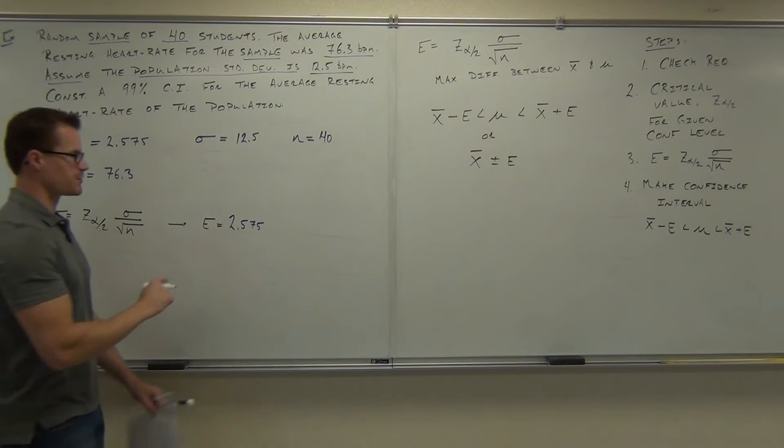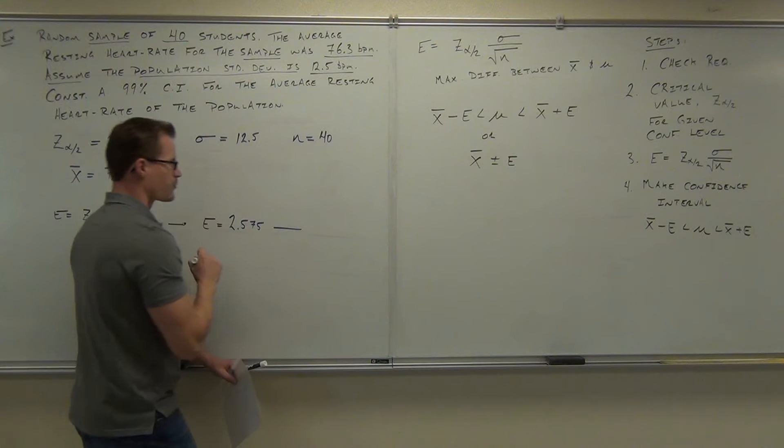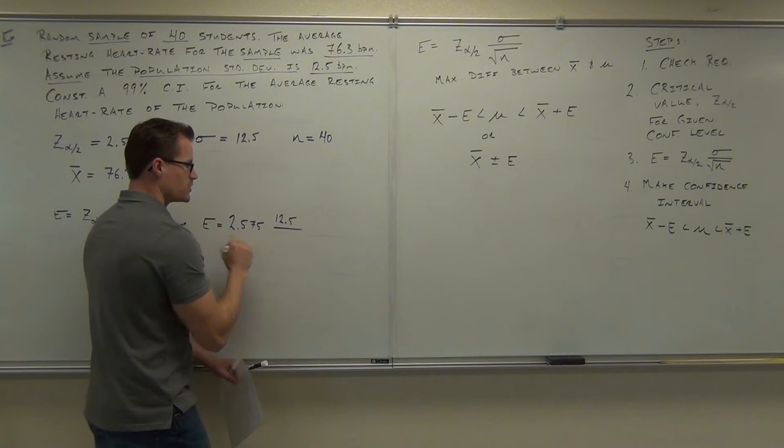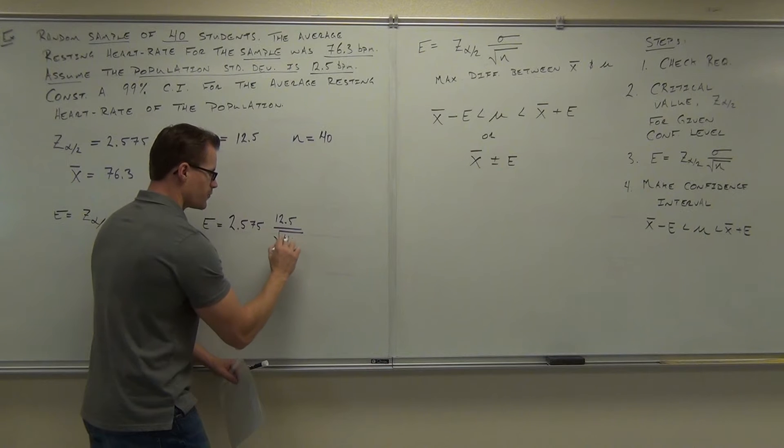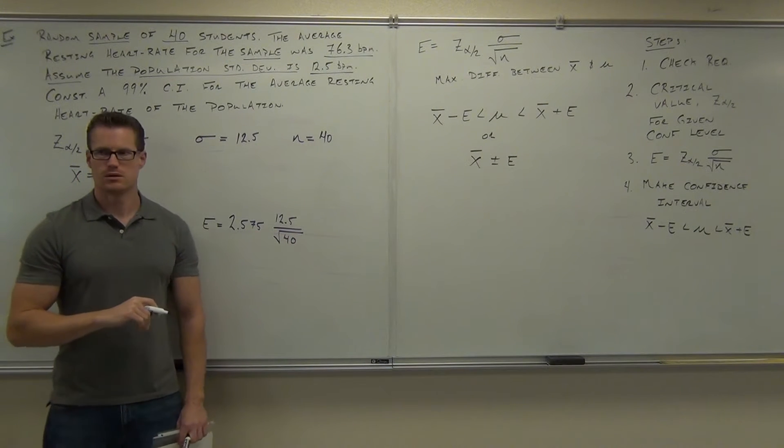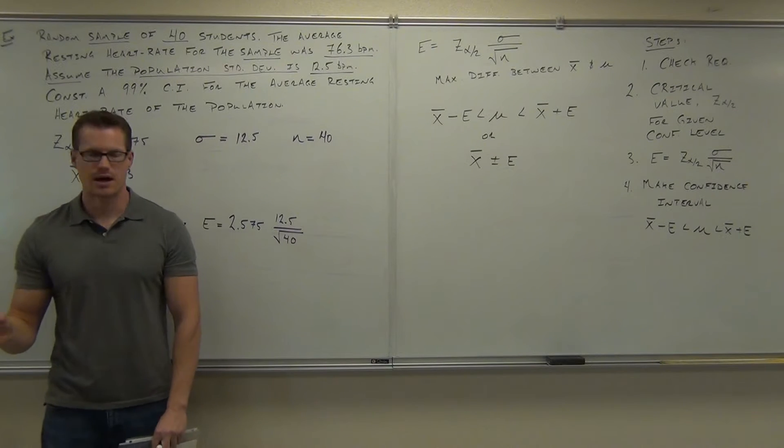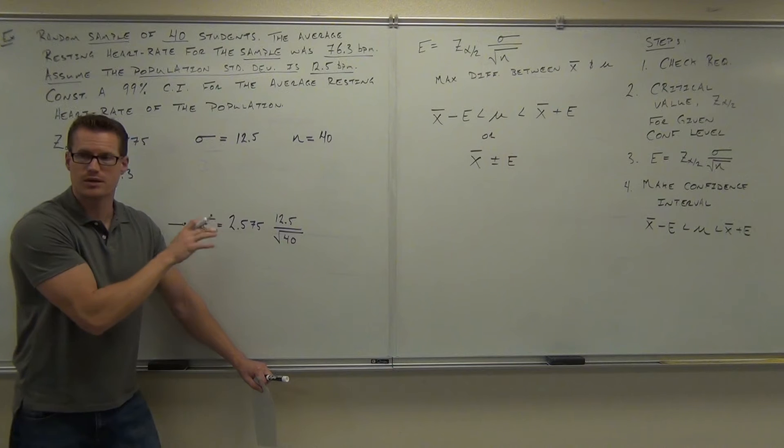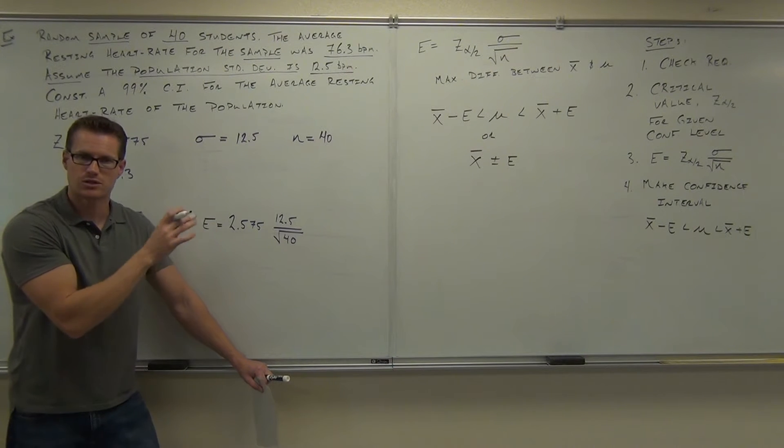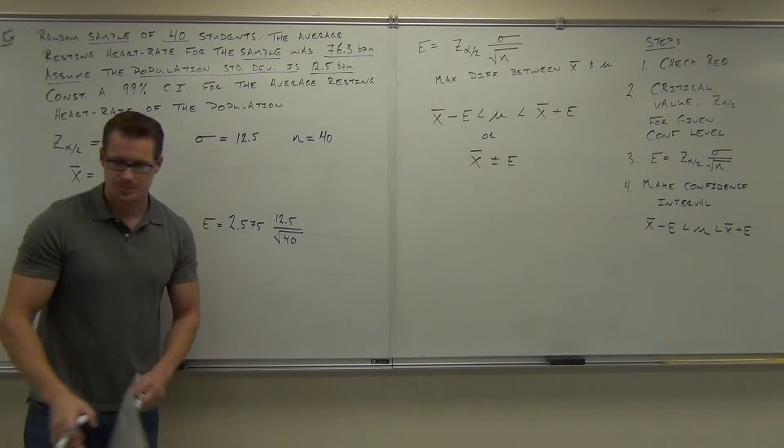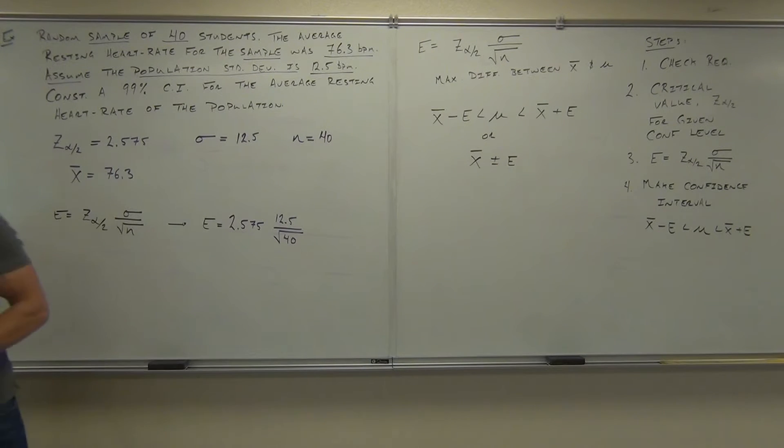So you take your critical value. You multiply that by your population standard deviation divided by the square root. Don't forget square root of your sample size. So we should have the 2.575. We should have a fraction. 12.5 goes on the numerator. The square root of 40 goes on the denominator. Give me a little head nod if you got that far. Good. Just substitute stuff in now. Of course, we're definitely not going to round any of this stuff. If you start rounding things, your confidence interval is going to be off by a little bit.